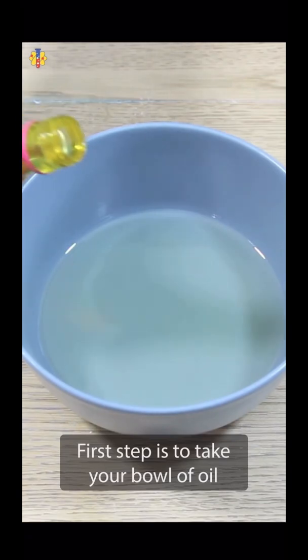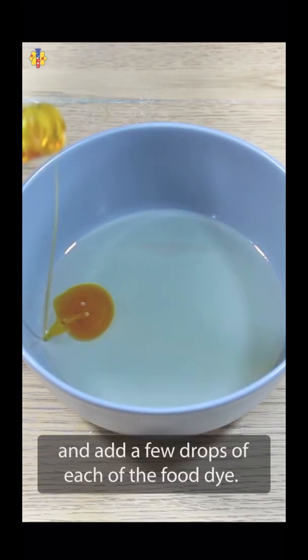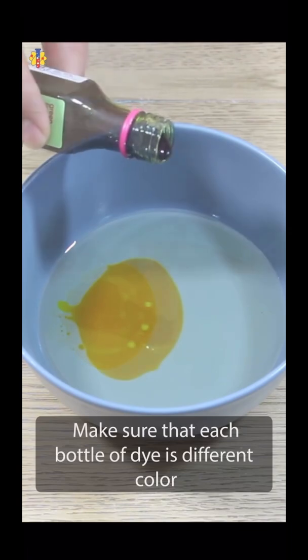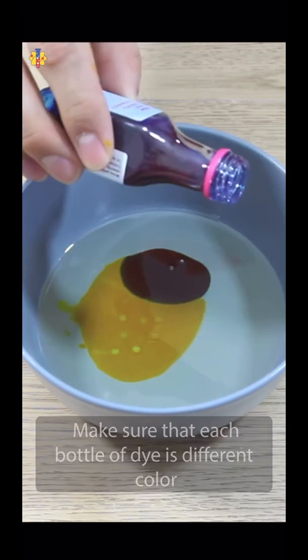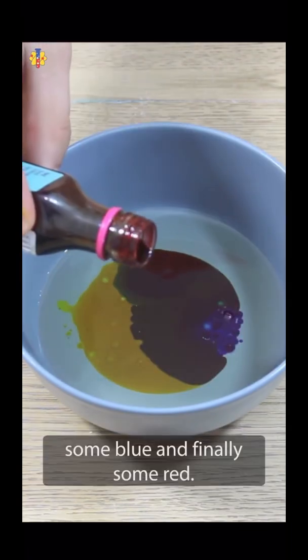The first step is to take your bowl of oil and add a few drops of each of the food dye. Make sure that each bottle of dye is a different color. Some blue, and finally some red.